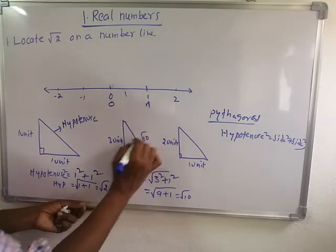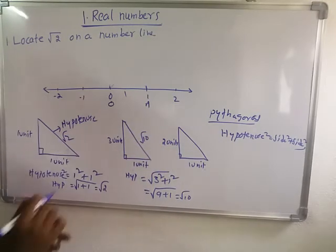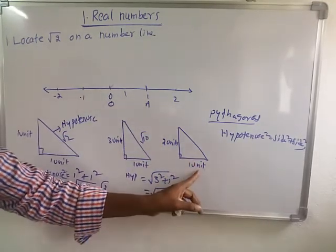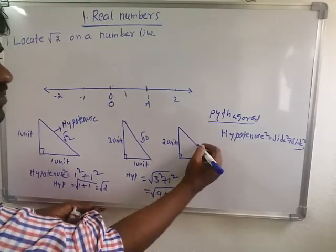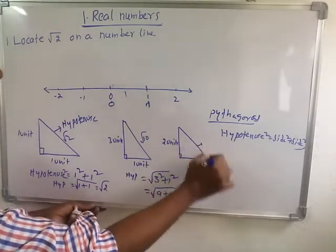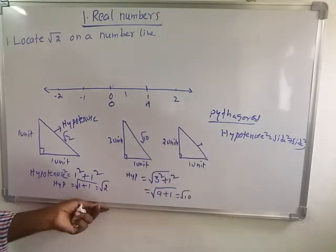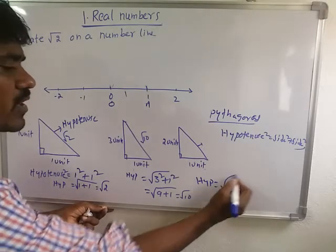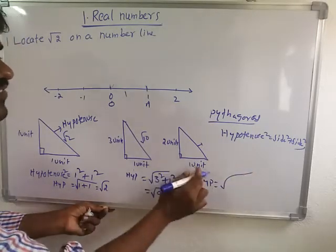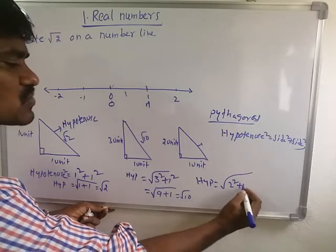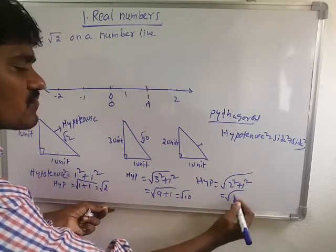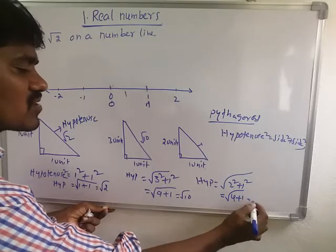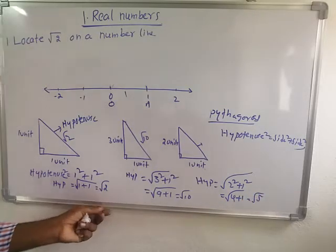This length is square root ten, and this length is square root two. Now here the hypotenuse equals the square root of side squared plus side squared — that is two squared plus one squared — which equals the square root of four plus one, that is the square root of five.